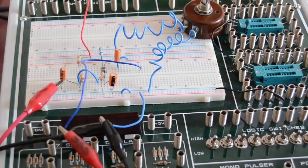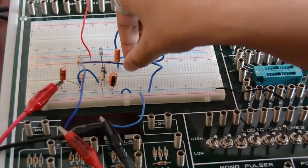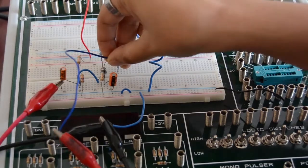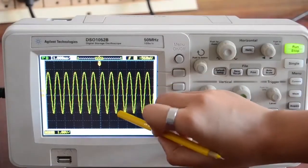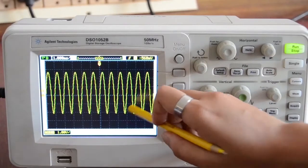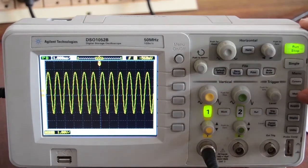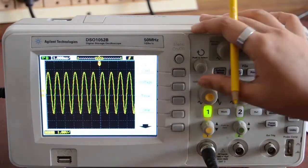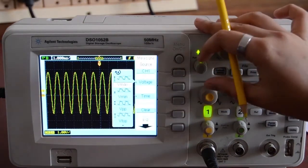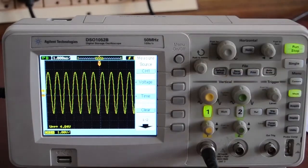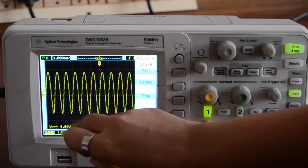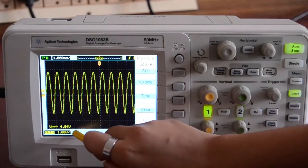Now, let's see the output of the amplifier. The output is taken from the collector. This is the output of RC Coupled Amplifier. Now, let me show you the measurements. A peak-to-peak voltage of approximately 5V is obtained.